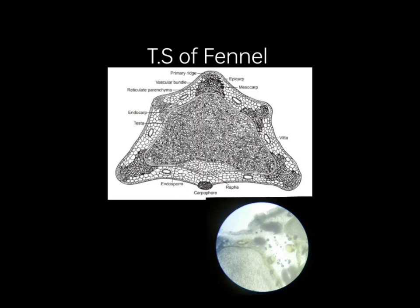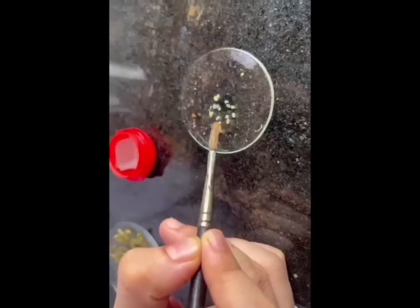Adjust the slide under the microscope. This is the DSR fennel showing epicarp, mesocarp, vittae, raphe, carpophore, endosperm, testa, reticulate parenchyma, and vascular bundle.